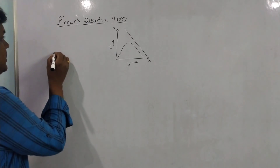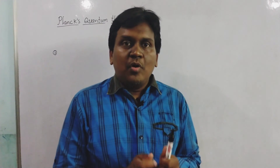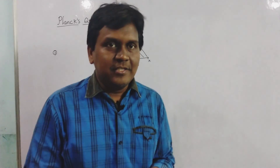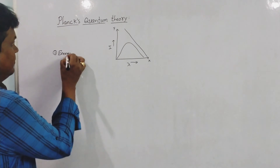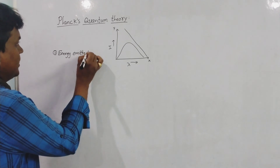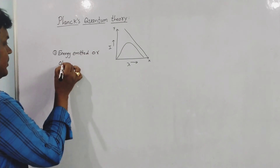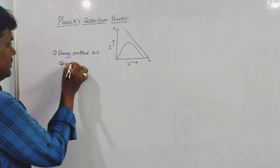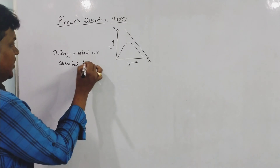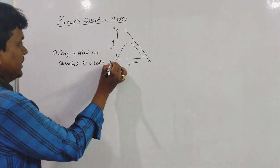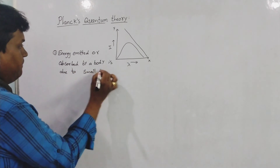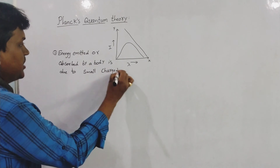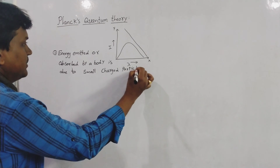In Planck's quantum theory, the first point is: the energy emitted or absorbed by a body is due to small charged particles.